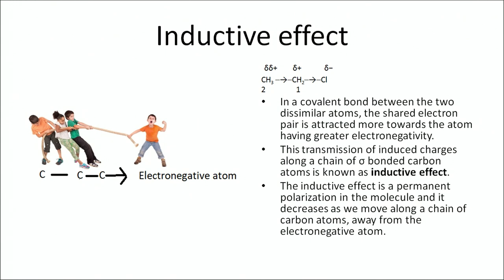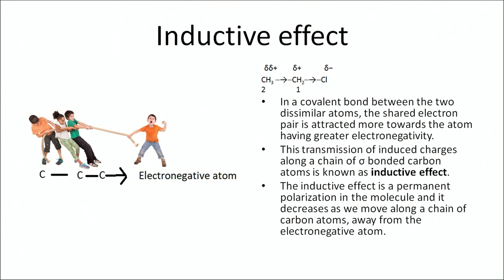Let us understand the inductive effect. You can see here a man pulling three men — because he has more power. That particular man is acting as an electronegative atom, which can be depicted from the molecule CH₃CH₂Cl. In a covalent bond between two dissimilar atoms, the shared electron pair is attracted more towards the electronegative atom, hence developing a polarity. This polarization is caused in the sigma-bonded carbon atoms. Such an effect is called the inductive effect, and it is a permanent effect.